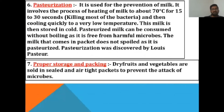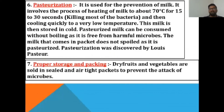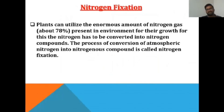The next method is proper storage and packing: dry fruits and vegetables are sold in sealed and airtight packets to prevent the attack of microbes. We will now study the important topic of the chapter — nitrogen fixation and the nitrogen cycle.